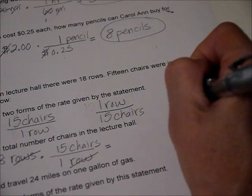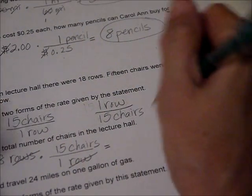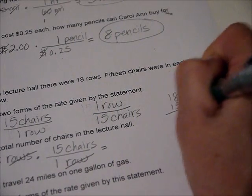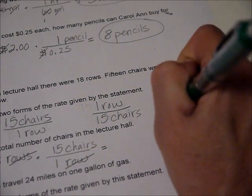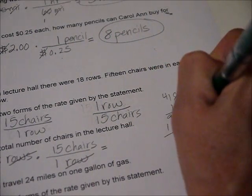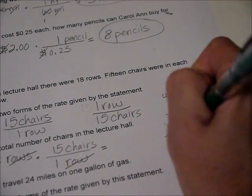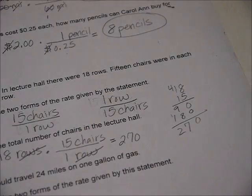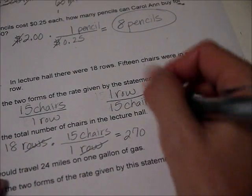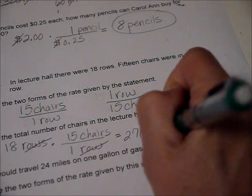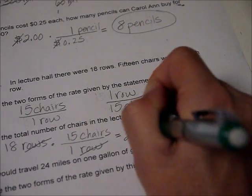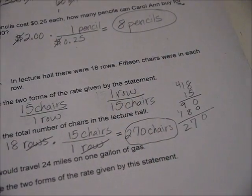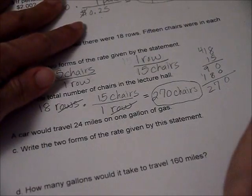So really, we have to do 15 times 18. Yikes. Now, you probably already knew that common sense-wise, but showing how to multiply units is what we are practicing here. I'm doing another late night one, so if I made a mistake there, I expect some feedback. So 270 chairs total in the lecture hall.